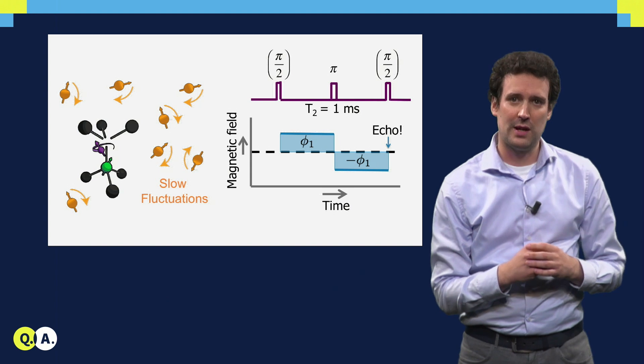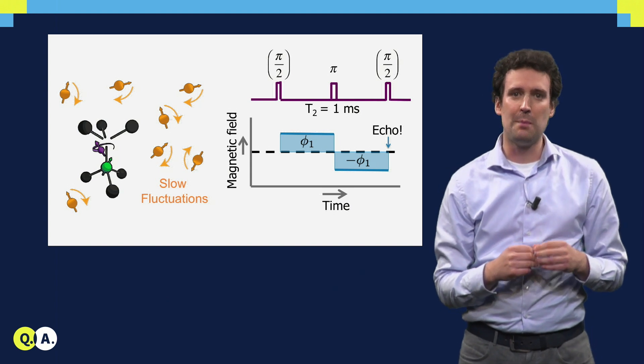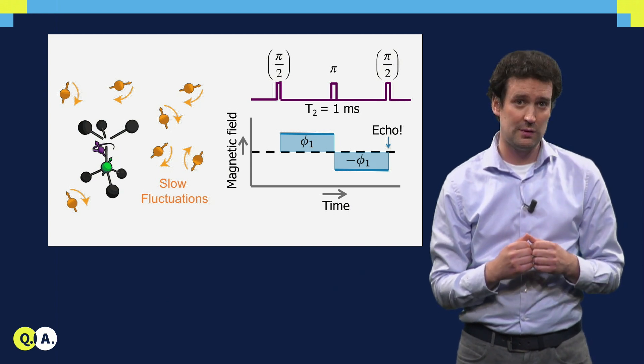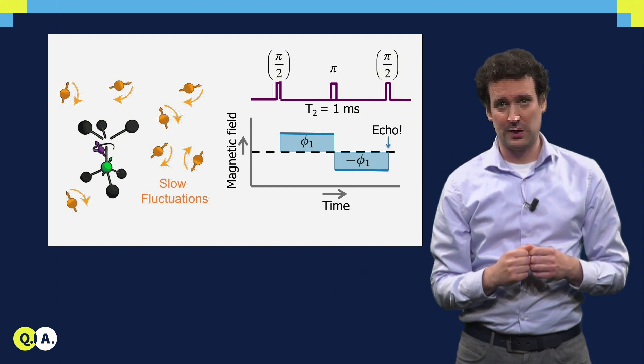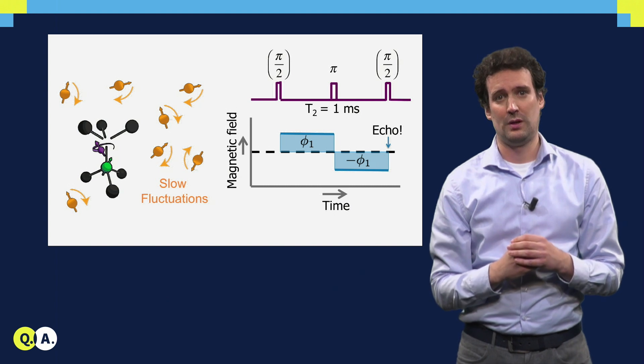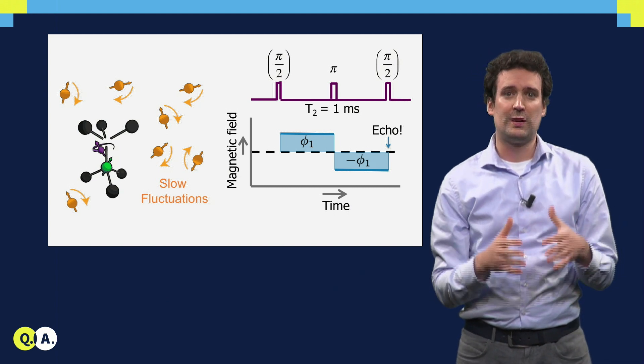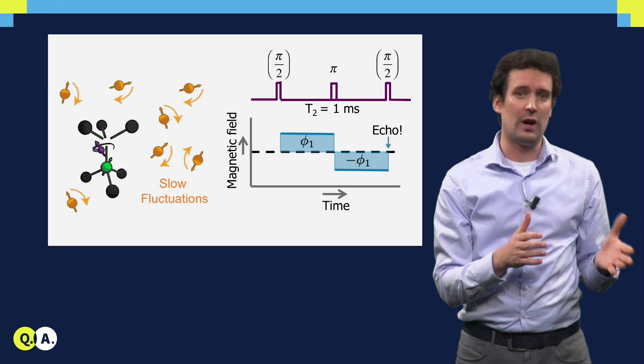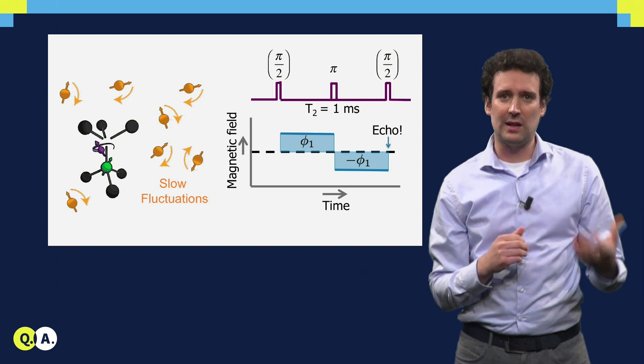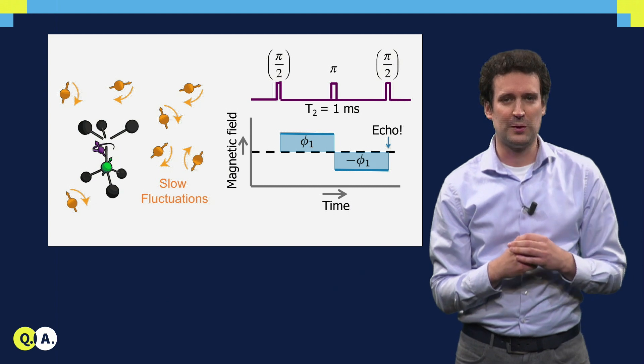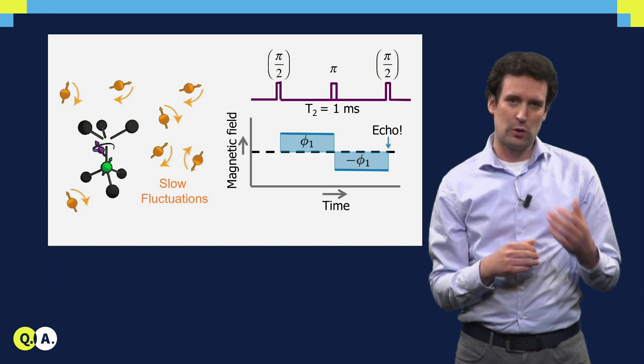But luckily we can play a trick. We can apply a pulse that inverts the state of the NV, that is we flip it, and this also inverts the effect of the magnetic field on the spin. If we have the same time before and after this flip, then the effect of the field exactly cancels and the quantum state is protected. We call this a spin echo.